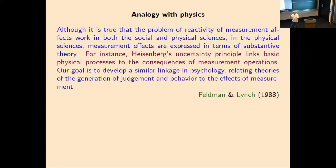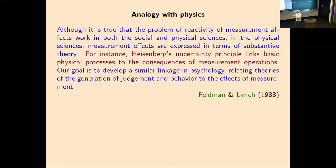A hundred years later, post the existence of quantum mechanics, some psychologists with physics envy noted that since at least Galton, we've understood that observing one thing can influence another. In physics, Heisenberg's uncertainty principle links basic physical processes to the consequences of measurement operations. Their goal was to develop a similar linkage in psychology, relating theories of the generation of judgment and behavior to the effects of measurement.